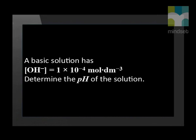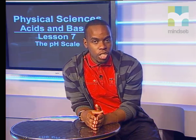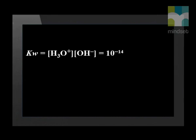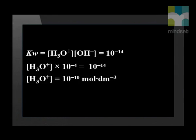First, we must determine the concentration of the hydronium ion from the given concentration of the hydroxyl ion, and thereafter we can determine the pH of the solution. We substitute the given concentration of the hydroxyl ion into the ionization constant of water and determine the concentration of the hydronium ion. Now we can determine the pH of the solution by substituting the concentration of the hydronium ion into the pH equation.